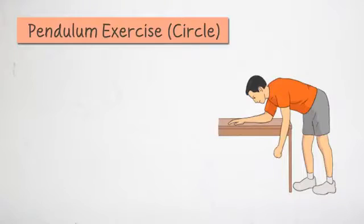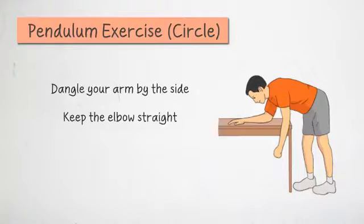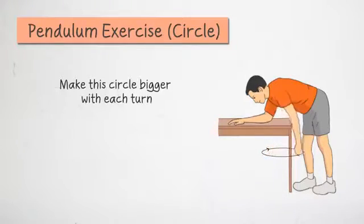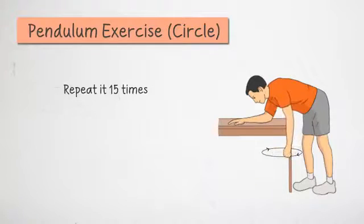Pendulum exercise, circle. Dangle your arm by the side. Keep the elbow straight. Make a circle with your hand. Make this circle bigger with each turn. Repeat it 15 times.